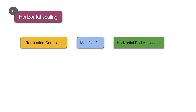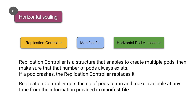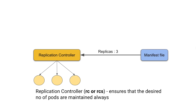There are three tools in Kubernetes for scaling: replication controller, manifest file, and horizontal pod autoscaler. The replication controller enables creating multiple pods and ensures that the specified number of pods always exist — if any pod crashes, the replication controller replaces it. It gets the required pod count from a manifest file, which has a property called 'replicas' with a count. If it says replicas: 3, the replication controller creates and manages three replicas. Replication controller is abbreviated as RC or RCS.